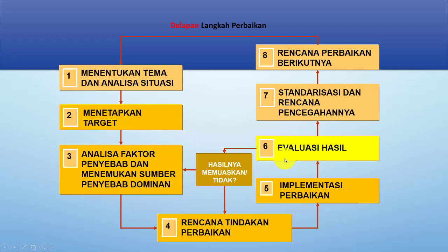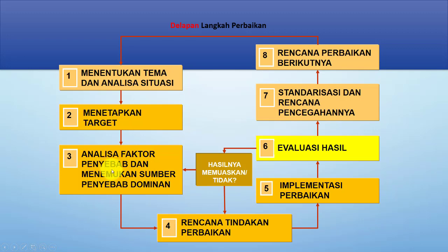Pada saat evaluasi, kita akan lihat apakah hasilnya memuaskan atau tidak. Dikategorikan memuaskan apabila target dapat tercapai. Bila mana tidak tercapai, maka akan kembali ke langkah keempat — barangkali rencana tindakan perbaikan tidak sesuai, maka diperbaiki, diimplementasikan kembali, lalu dievaluasi kembali. Apabila masih belum sesuai, kembali ke langkah ketiga yaitu analisa faktor penyebab dan menemukan sumber penyebab dominan. Jika sudah sesuai dengan target, masuk ke langkah ke-7 yaitu standarisasi dan rencana pencegahan, lalu langkah ke-8 rencana perbaikan berikutnya, dan kembali ke langkah pertama QCC.